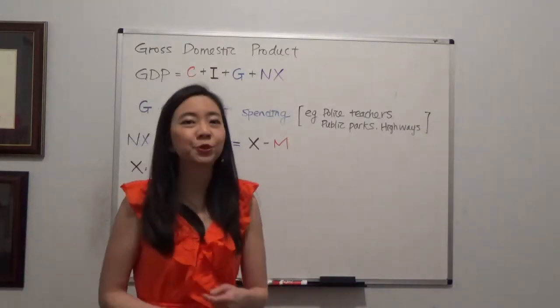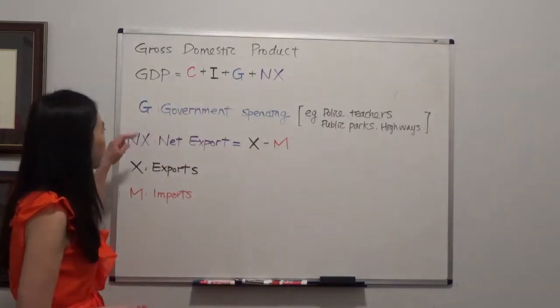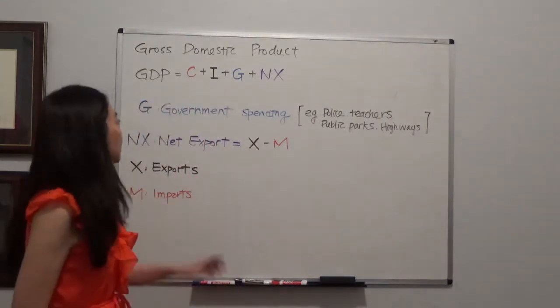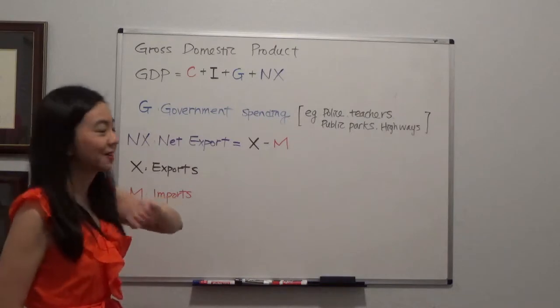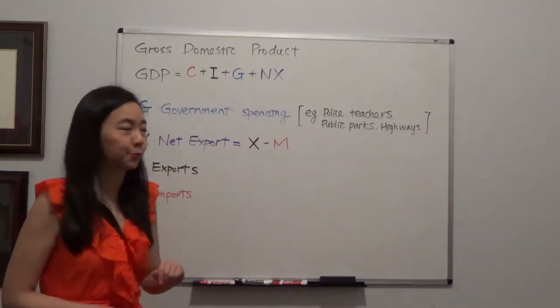In particular, we're going to talk about two components in GDP. The first one is government spending and then we're going to talk about net export.